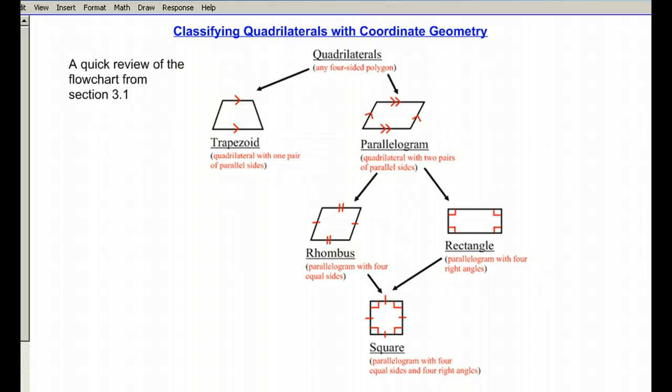Some of the parallelograms could also be considered a rhombus or a rectangle. A rhombus if all sides are equal, rectangle if there's four right angles. Or it could be a combination of both, which would make it a parallelogram with four equal sides and four right angles, which, of course, is a square.